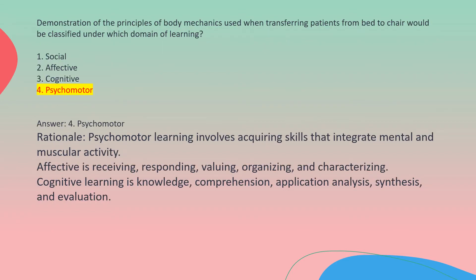Answer: 4. Psychomotor. Rationale: Psychomotor learning involves acquiring skills that integrate mental and muscular activity. Affective is receiving, responding, valuing, organizing, and characterizing. Cognitive learning is knowledge, comprehension, application, analysis, synthesis, and evaluation.